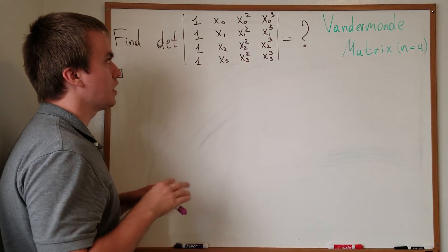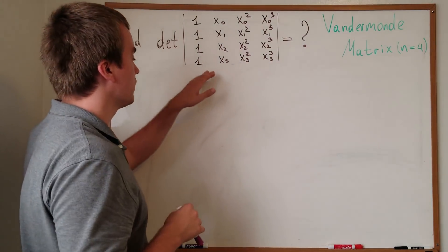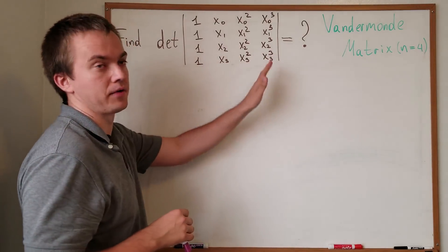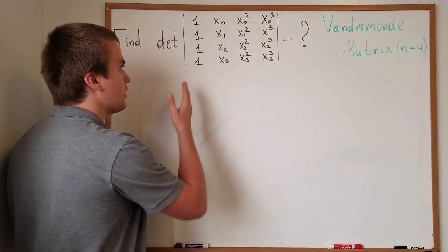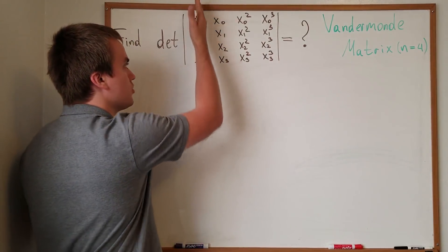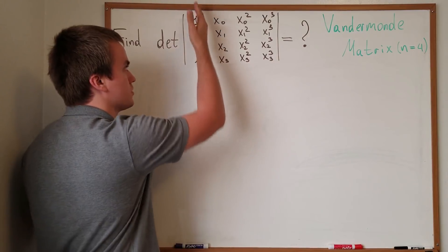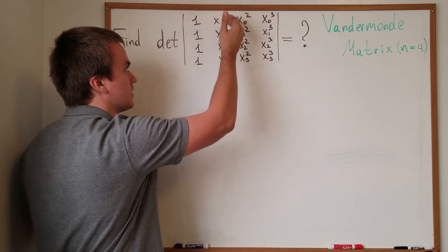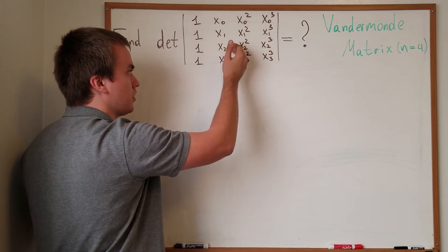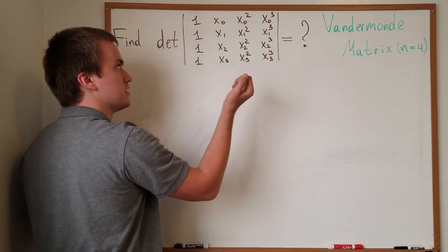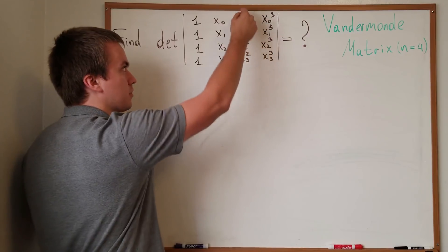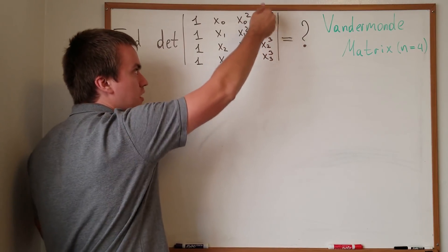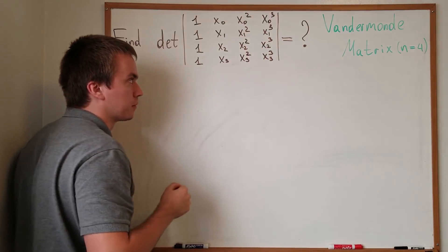To find the value of the determinant we need to identify the pattern. The first column is all ones, the second column is x₀, x₁, x₂, x₃, the third column is those same values squared, and the fourth column is everything cubed.